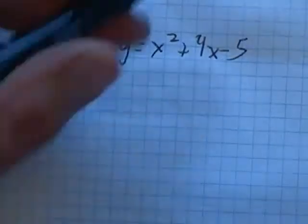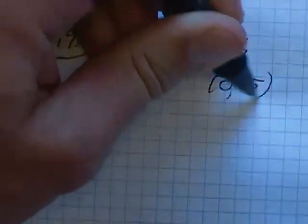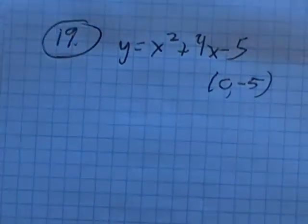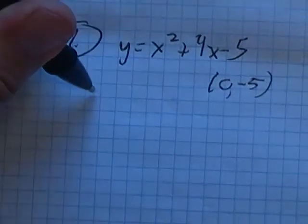Y-intercept is right there. Remember when x is 0, 0 squared plus 4 times 0, y is negative 5. Let's do the vertex next.